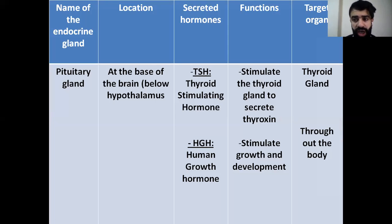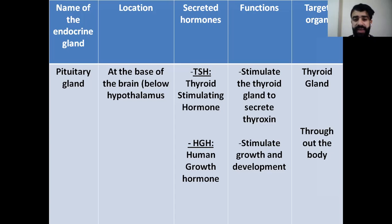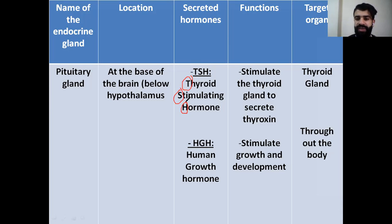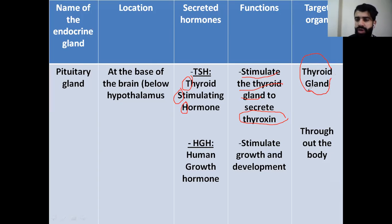Moving now to the glands. The pituitary gland is located at the base of the brain, below the hypothalamus. This gland secretes two hormones: TSH (thyroid stimulating hormone) and HGH (human growth hormone). The thyroid stimulating hormone stimulates the thyroid gland to secrete the hormone thyroxine, and its target organ is the thyroid gland.